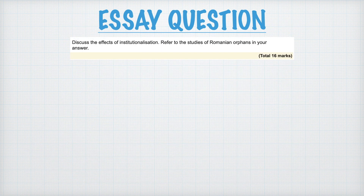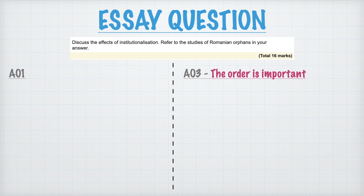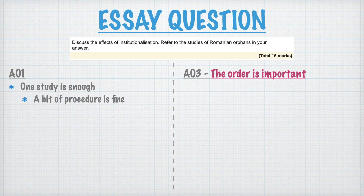The final question is an essay — a 16 marker: 'Discuss the effects of institutionalization and refer to the studies of Romanian orphans in your answer.' It's a discuss question, which means you need strengths and limitations and ideally some discussion points to help the essay flow. We'll look at the essay in its entirety in a minute. We'll start with our AO1 — ultimately, one study is enough. A bit of procedure is fine, but your focus should be on the findings of that research.